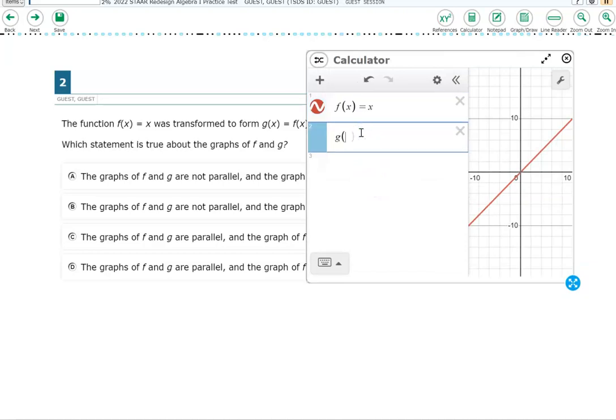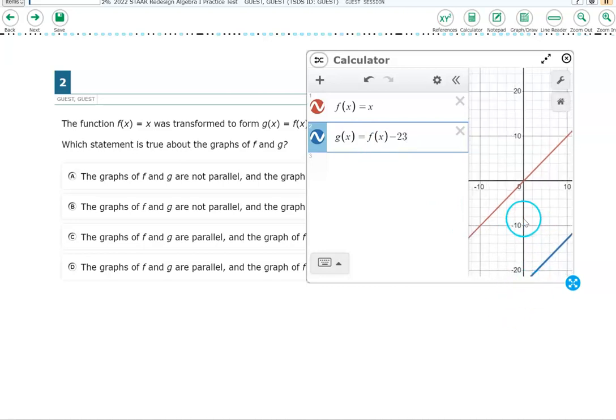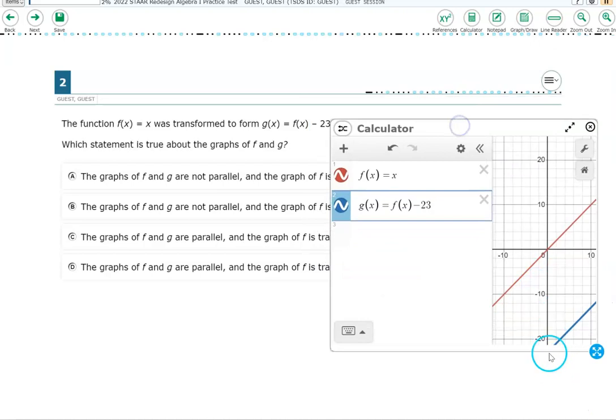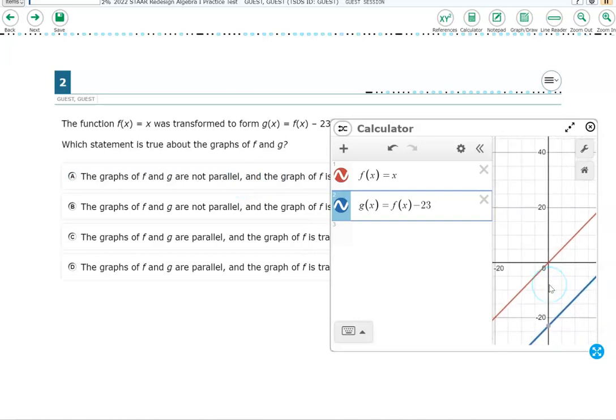All right. G of x is equal to f of x minus 23. So let's go here and type g of x equals f of x minus 23. And what it's doing is it's taking the graph of f of x and it's transforming that graph. And you should be able to see the blue line is down here. So let's read these answers and see which one actually makes sense. The graphs are not parallel. Well, these are parallel. I mean, hopefully you could tell that just by looking. They are parallel. So the answers c and d are going to be our choices.